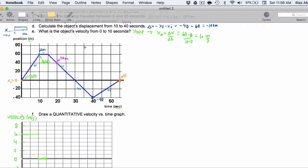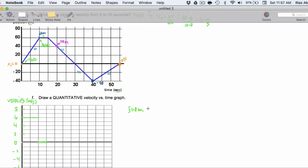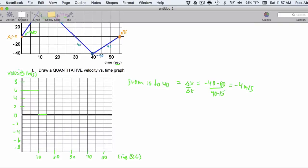Now, let's get the slope from 15 seconds to 40. So, from 15 to 40, that's going to be delta x over delta t. That's going to be negative 40 minus 60 all over, that's 40 minus 15. And I'm getting negative 4 meters per second there.